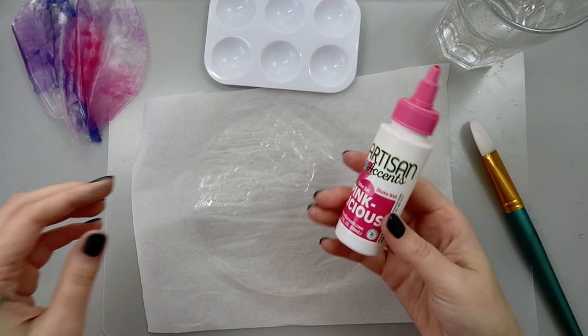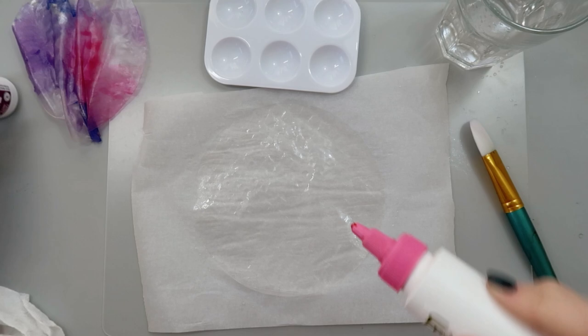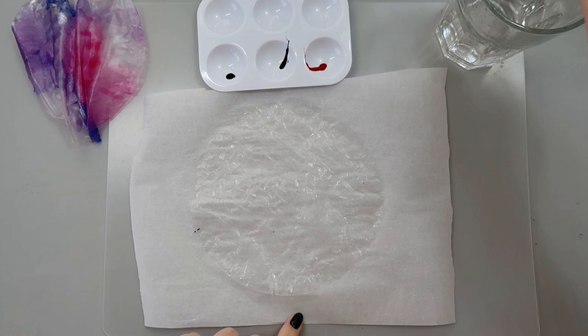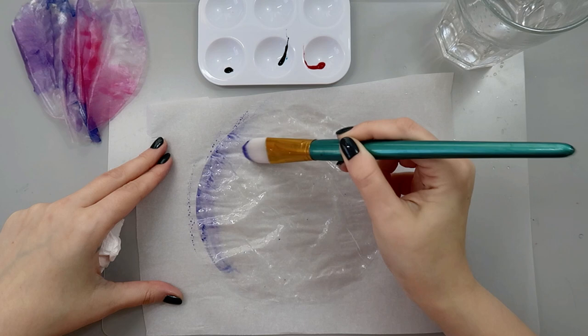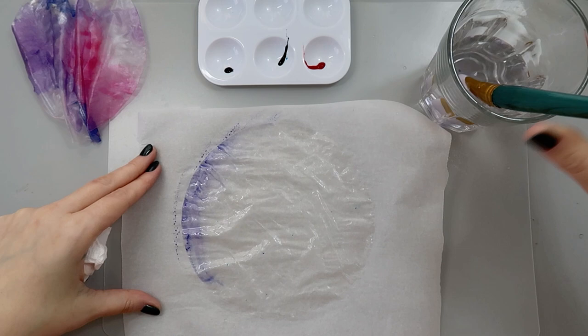To paint this watercolor effect, I'm going to use these three colors by Artisan Accents. These are gel colors, so they are water soluble. I'm making sure that I'm applying enough water. You can see I already have a little bit of this color here, so I'm going to dip my brush and clean my brush in between applications.